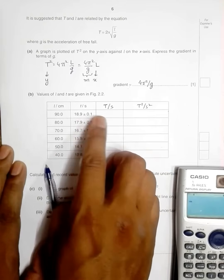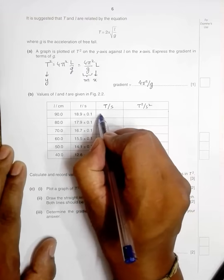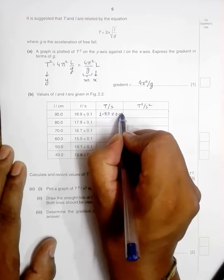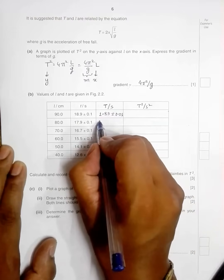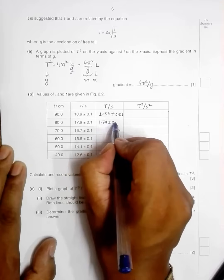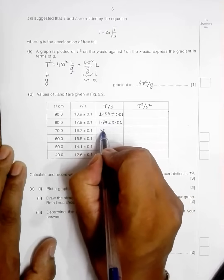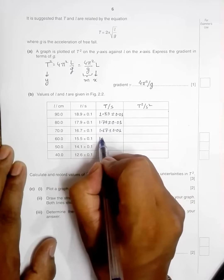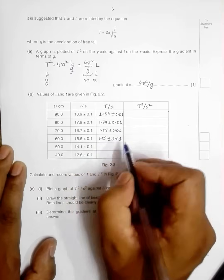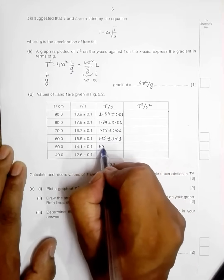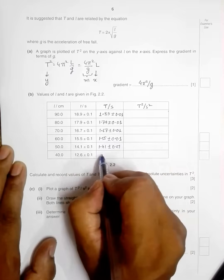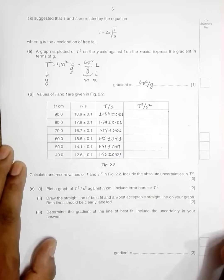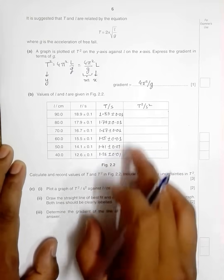It is the time period for one oscillation, so this divided by 10 gives this value. I can just write it like this: 1.89 ± 0.01, 1.79 ± 0.01, 1.67 ± 0.01, 1.55 ± 0.01, 1.41 ± 0.01, and 1.26 ± 0.01. So not much difficult in this case.